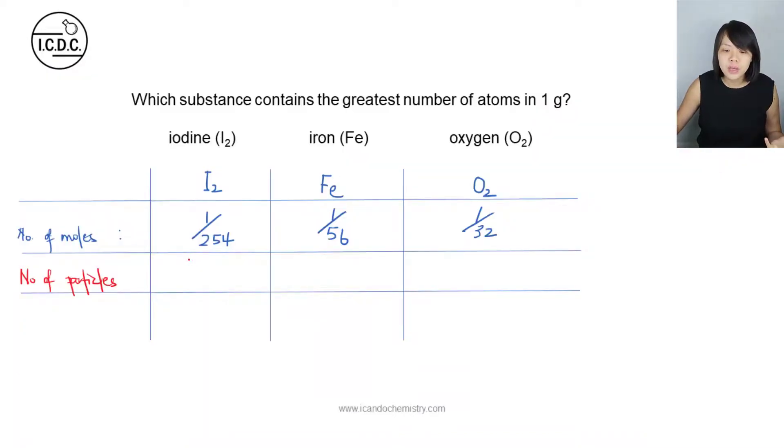For iodine, it will be 1 over 254 multiplied by the Avogadro's number. For iron, it will be 1 over 56 multiplied by the Avogadro's number. For oxygen, it will be 1 over 32 multiplied by the same number, 6 times 10 power 23.